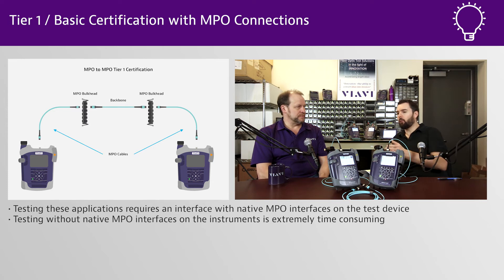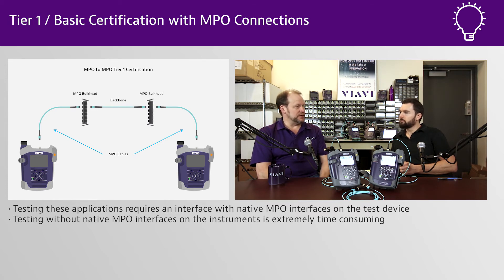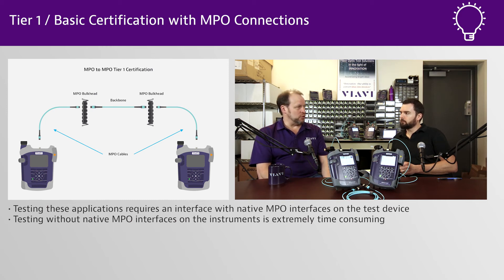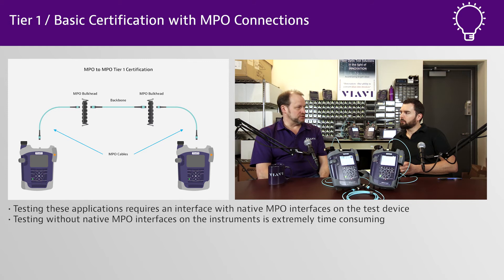This is more prevalent when you get into 40 gig and 100 gig with QSFPs, where you've got a direct QSFP or MPO connection into your switch and servers. Your link itself, instead of being a duplex LC, is a 12-fiber MPO — and that's why you need to test that link with native MPO testing. You can also test the channel by disconnecting from the QSFP plugged into the switch, server, or router and then testing the channel.